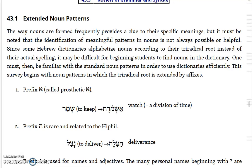Since some Hebrew dictionaries, particularly Brown, Driver, Briggs, alphabetize nouns according to their tri-radical root rather than their actual spelling, it may be difficult for a beginning student to find nouns in the dictionary. One must then be familiar with the standard noun patterns in order to use the dictionary efficiently.